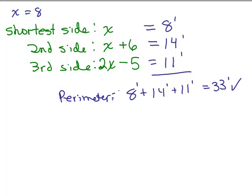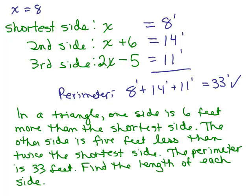And now let's look back at the words of the problem to make sure that our answer also makes sense from what it tells us about those 3 sides. So let's look at the original problem. We think that the answer is going to be 8 feet, 14, and 11 feet. In a triangle, one side is 6 feet more than the shortest side. So if the shortest side was 8, is one of the sides 6 feet more? Yeah, 14 is, so there's one that's 6 feet more.